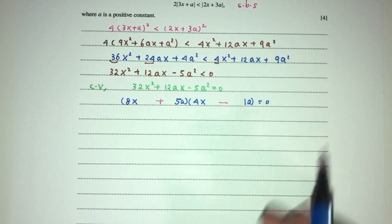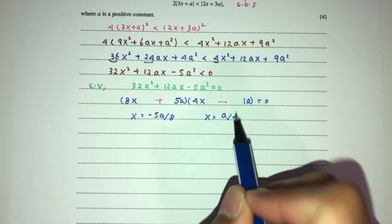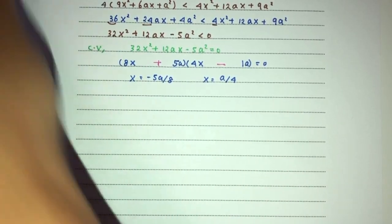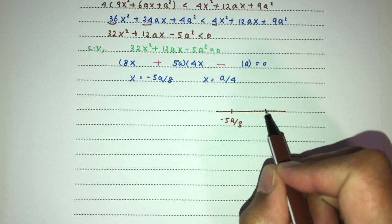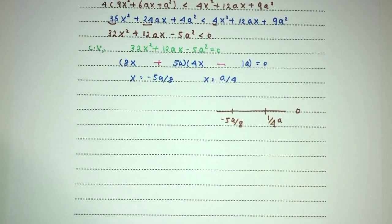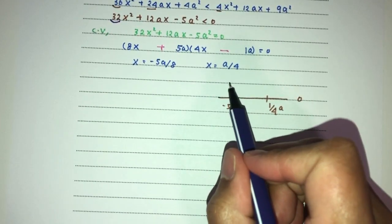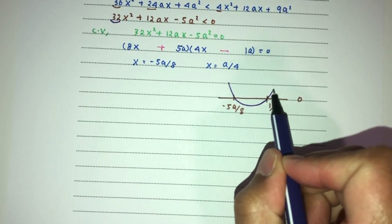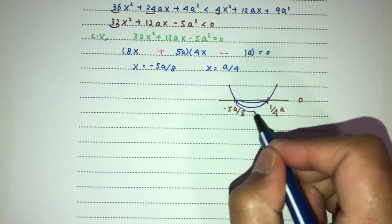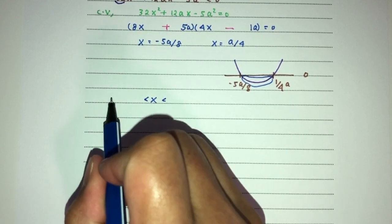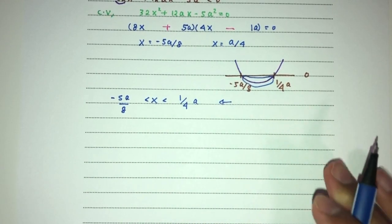Just use the formula to find the values of x if needed. x will be minus 5a over 8, and x will also be a over 4. Now we draw the number line: minus 5a over 8 and a over 4. The coefficient is positive (plus 32), so it's a minimum curve. We need the curve below zero, so x must be between minus 5a over 8 and a over 4. This is your answer for question number one.